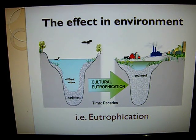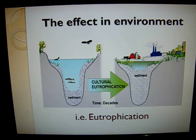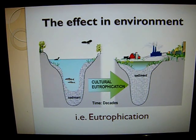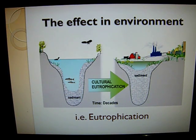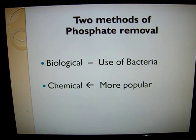Environmental engineers have long explored methods for the removal of phosphorus from wastewater in order to reduce possible eutrophication effects. Primary and secondary treatment techniques are relatively inefficient in removing phosphorus, with only about 10% extracted from raw wastewater in each step. Thus, special procedures during the tertiary treatment stage are needed to remove the remaining phosphorus. There are two methods of phosphate removal: the biological method, which uses bacteria, and the chemical method, which is more popular.